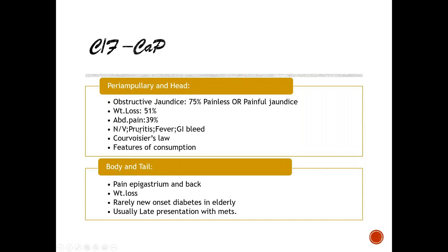For body and tail tumors, patients present with epigastric and back pain — typically relieved on bending forwards — along with weight loss and occasionally new-onset diabetes in the elderly. These patients usually present late with metastasis because the tumor does not obstruct the major ductal system, so clinical presentation is delayed.